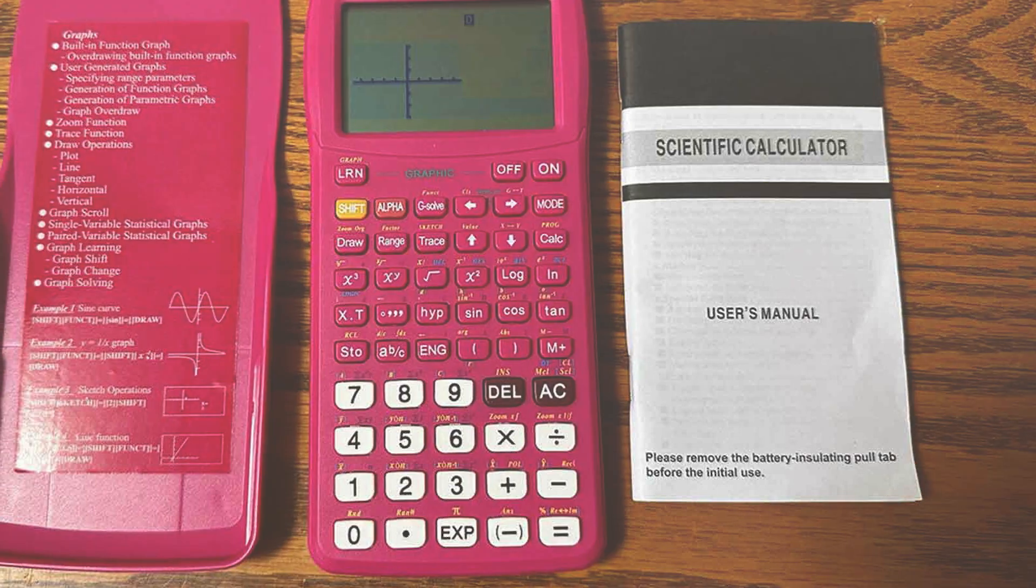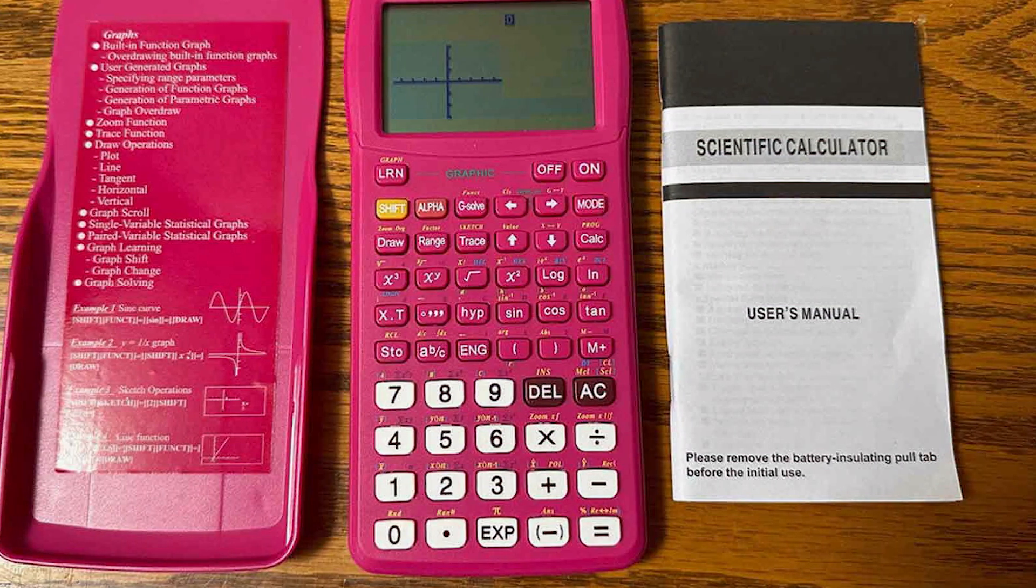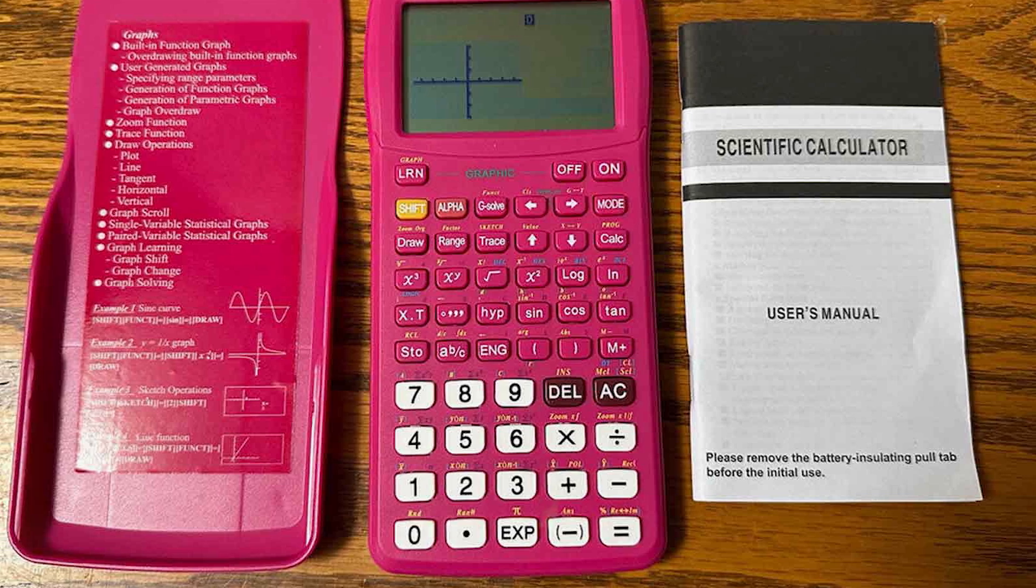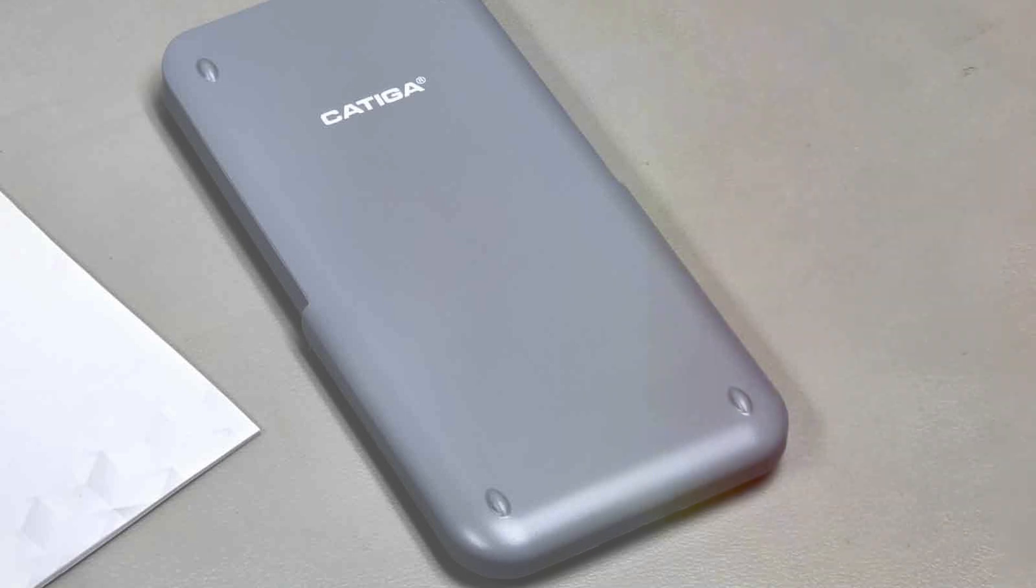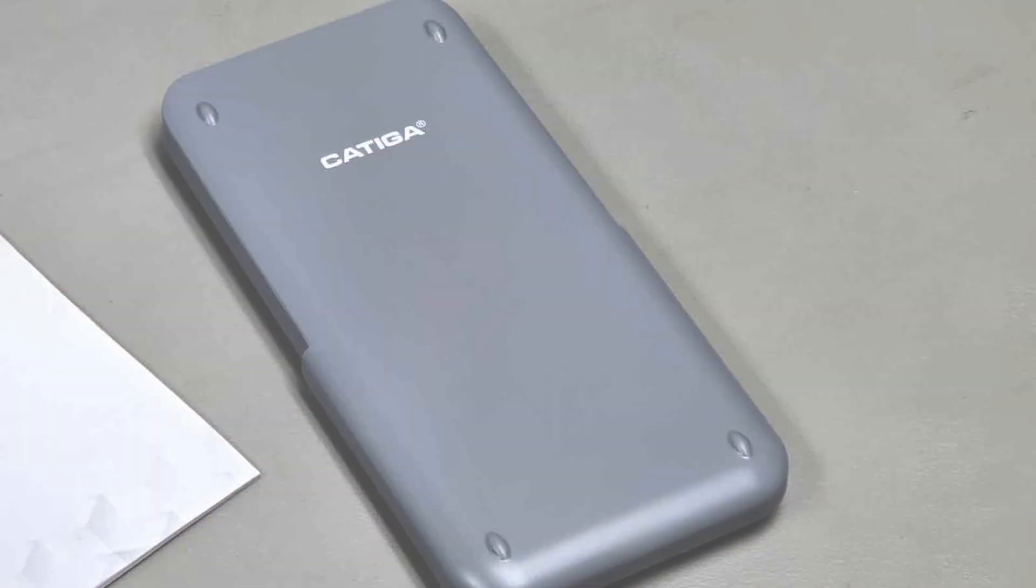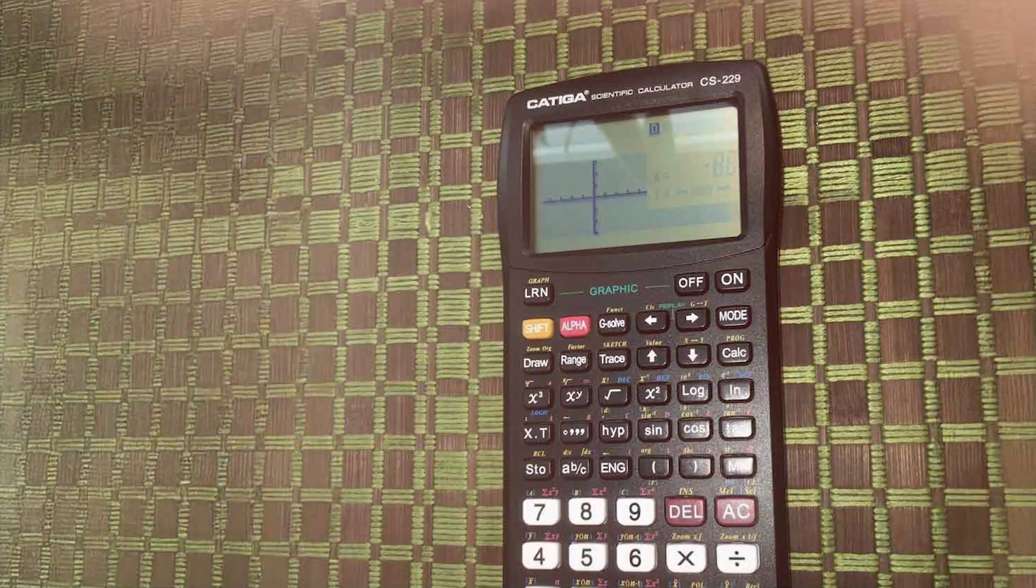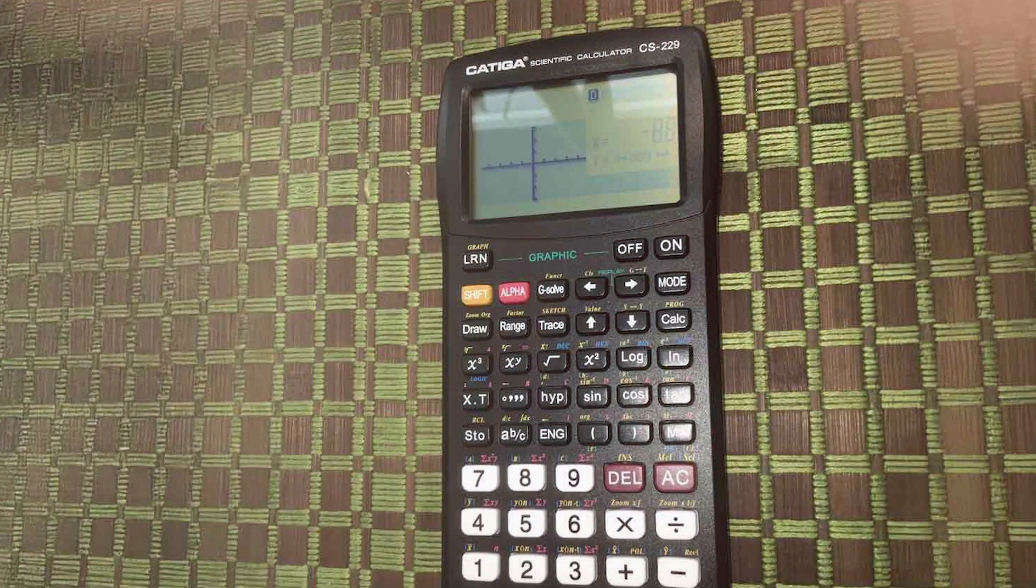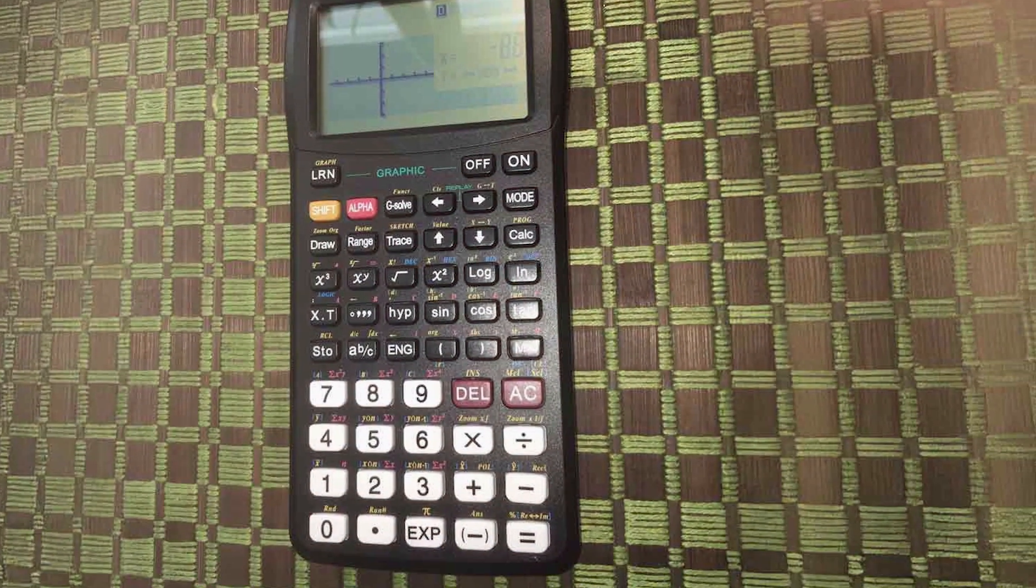In terms of quality, the CATIGA CS-229 is engineered for reliability. It offers a wide range of functionalities, including 2D and 3D graphing capabilities. This feature is particularly useful for visual learners who benefit from seeing their equations represented graphically. The calculator can handle complex equations and functions, making it an excellent choice for advanced mathematics courses, including calculus and algebra.